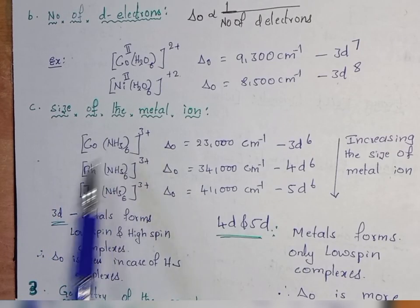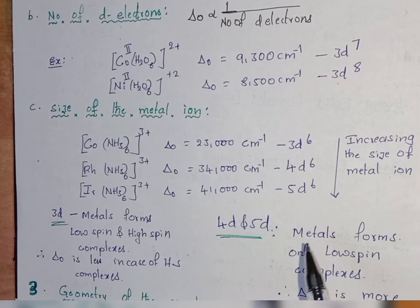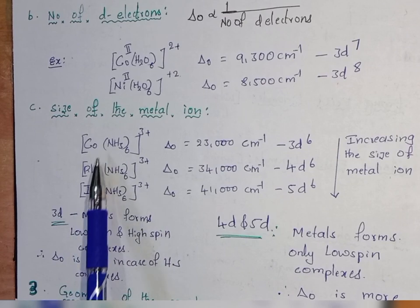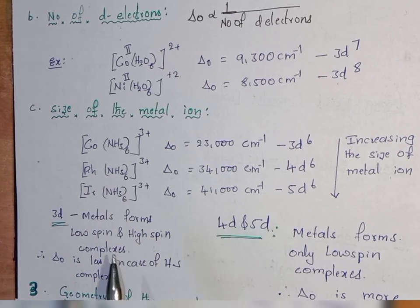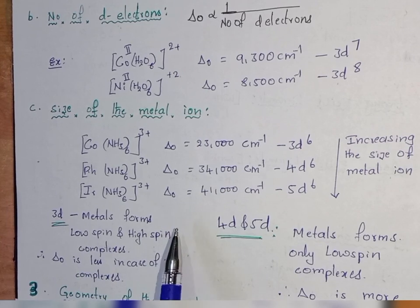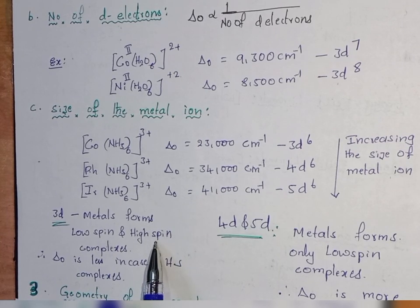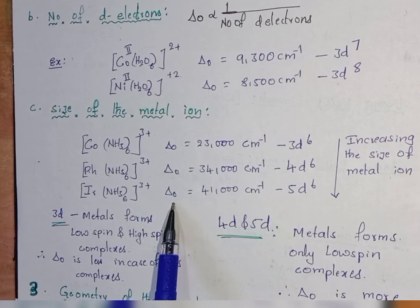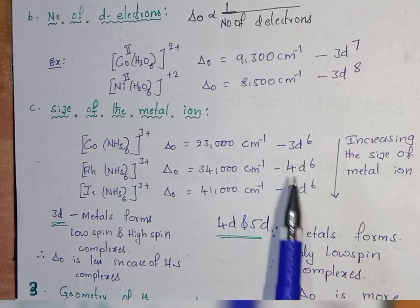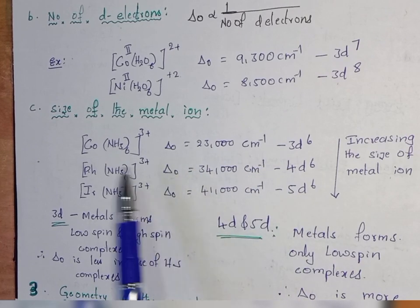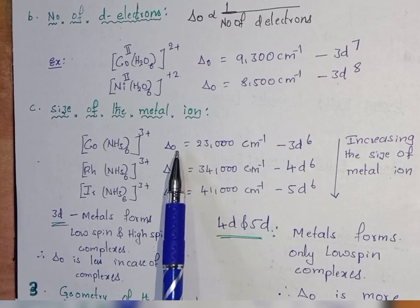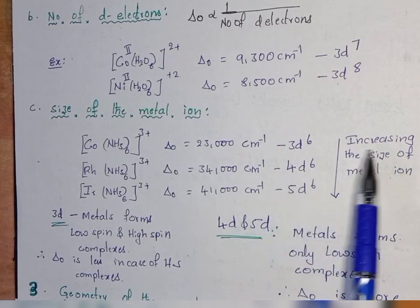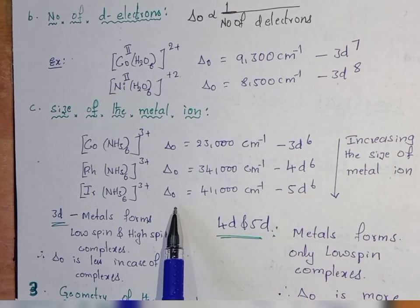The next factor is the size of the metal ion. As the size of the metal ion increases — for example going down the group: cobalt, rhodium, iridium — the atomic size increases. 3d metal complexes can form both low spin and high spin complexes, but 4d and 5d complexes tend to form only low spin complexes. Because of this, delta O increases from 3d to 4d and 4d to 5d. For example, hexamine cobalt, hexamine rhodium, and hexamine iridium show increasing delta O values. With increase in size of the metal ion, there is an increase in the value of delta O.